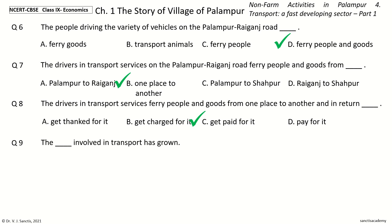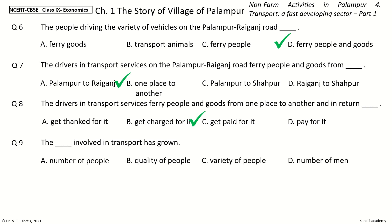Question 9: The dash involved in transport has grown. The options are: Number of people, Quality of people, Variety of people, Number of men. And the answer is Number of people. So, the number of people involved in transport has grown.